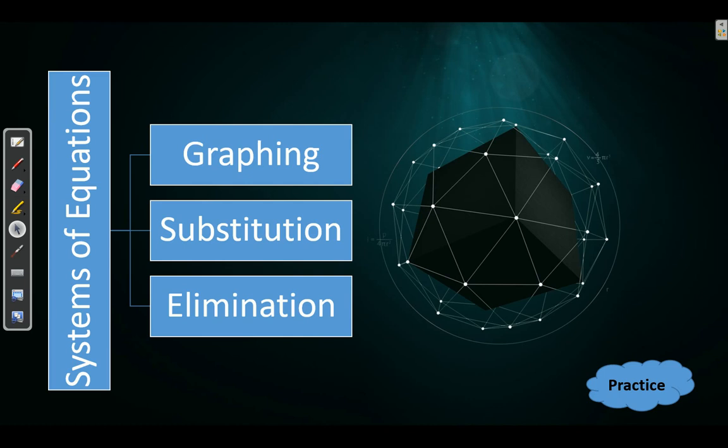How can you solve a problem that has two different equations? We're going to take a look at the three methods you did in Algebra 1. You can solve this by graphing, substitution, or elimination. We're going to take a look at each one of those to solve a system of two equations. First, graphing.